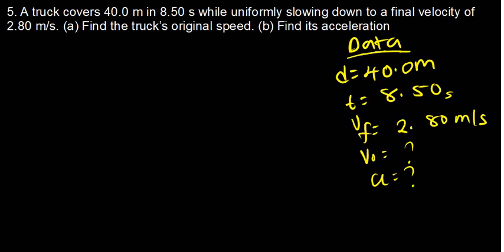In this tutorial, we are going to solve this question which says a track covers 40 meters in 8.50 seconds while uniformly slowing down to a final velocity of 2.08 meters per second. Part A: find the track's original speed, which is the initial speed. Part B: find its acceleration.